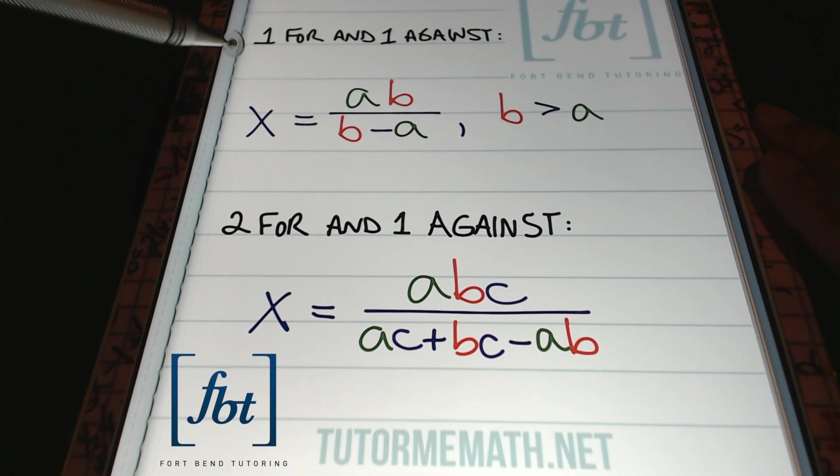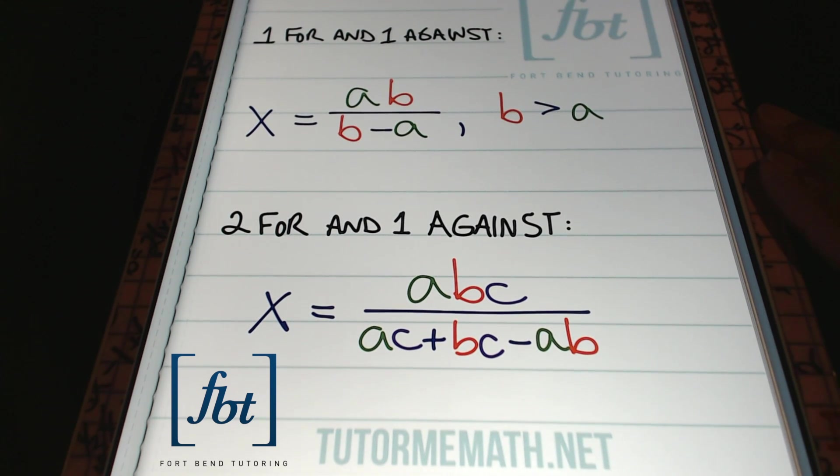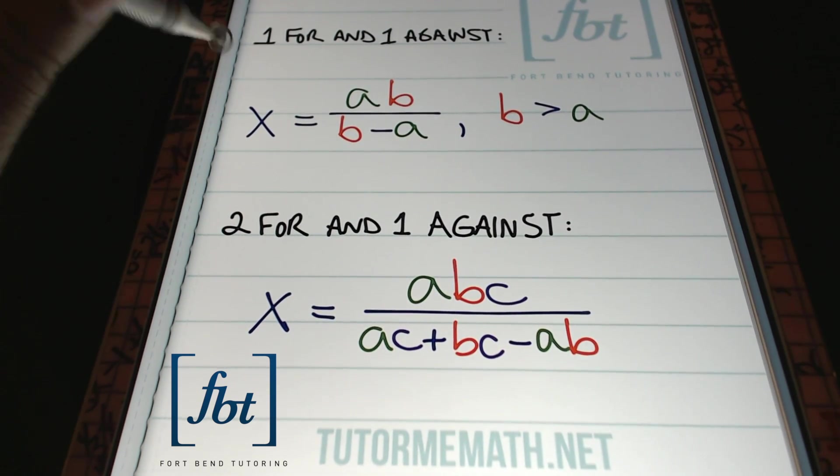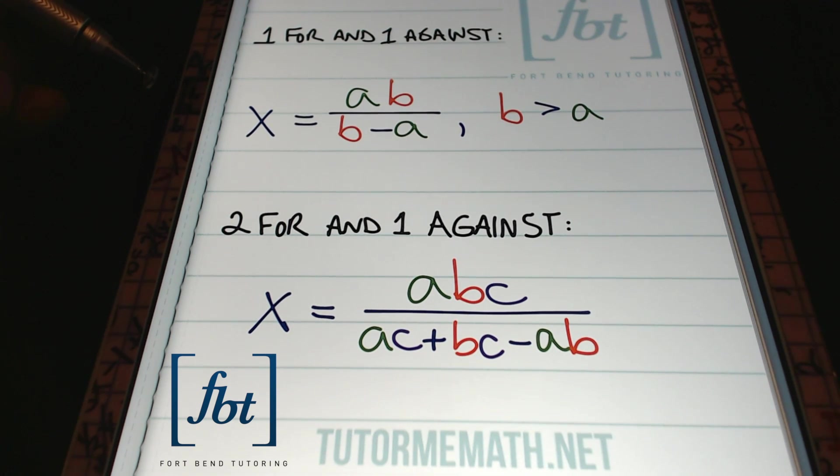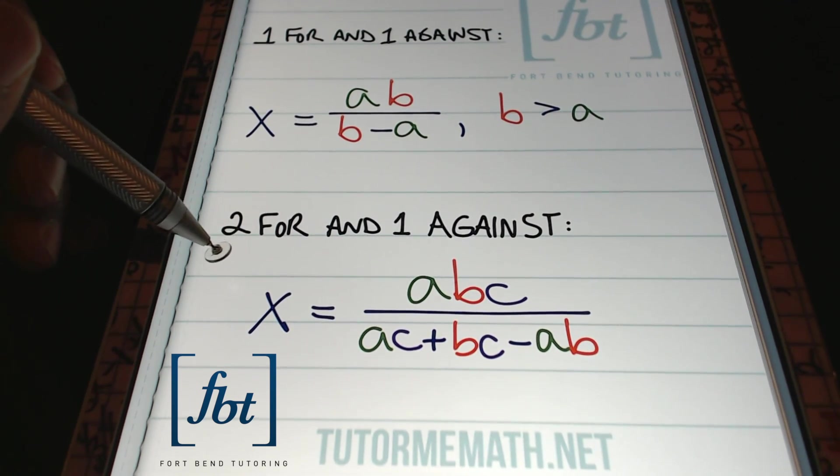So the A value in this formula will represent the first person's time or the first machine's time or the first pipe's time versus the time of the second machine or person. That'll be represented by that B value. All you got to do is multiply those values together and divide by their sum and you have your answer. Another work shortcut is for when you have one thing working towards something and one thing working against. For instance, let's say you have a work word problem where you have one inlet pipe and one outlet pipe. Those things are working against one another.